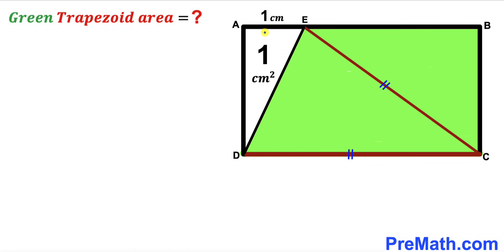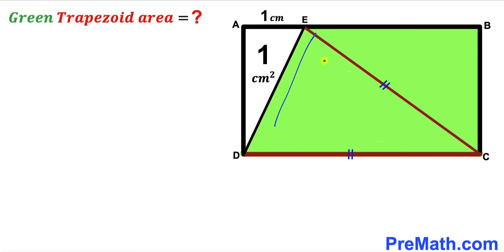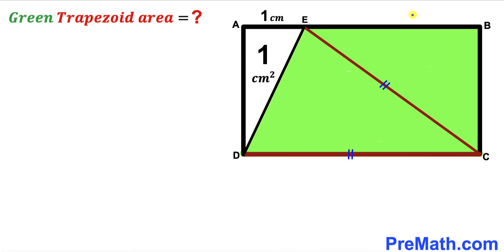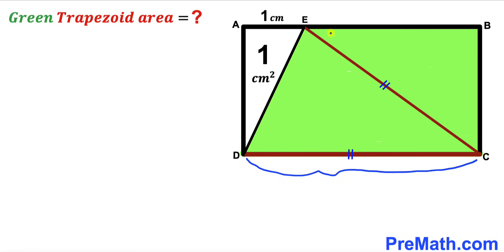Welcome to pre-math. In this video we have got rectangle ABCD that consists of right triangle AED and a green shaded trapezoid EBCD, as seen in the diagram, such that the area of triangle AED is 1 centimeter square, segment AE length is 1 centimeter, and side CD length equals segment CE length.